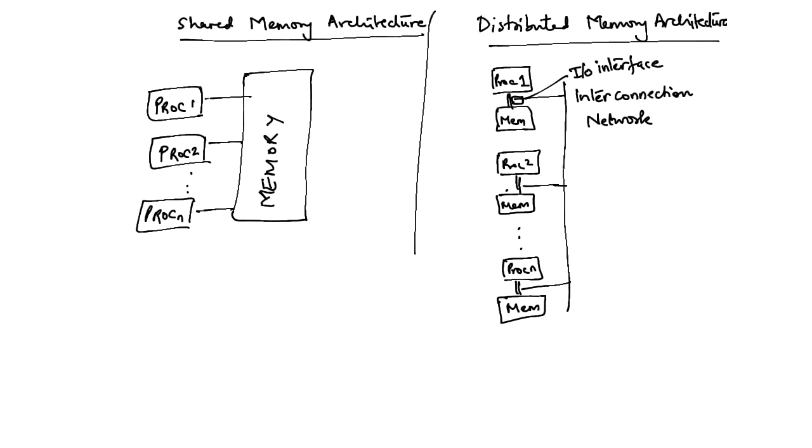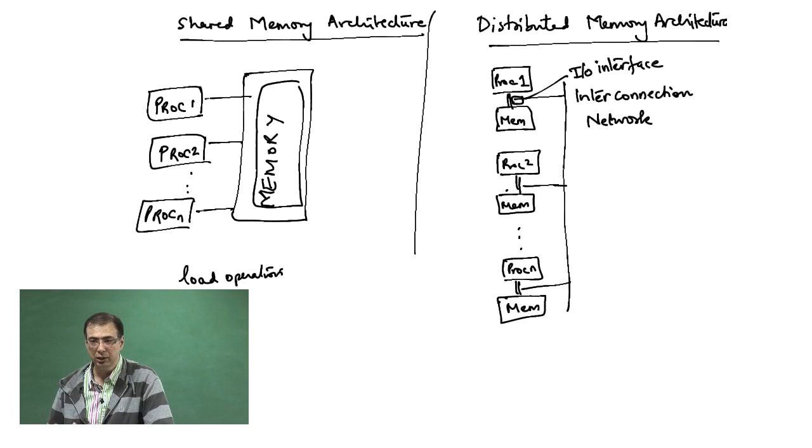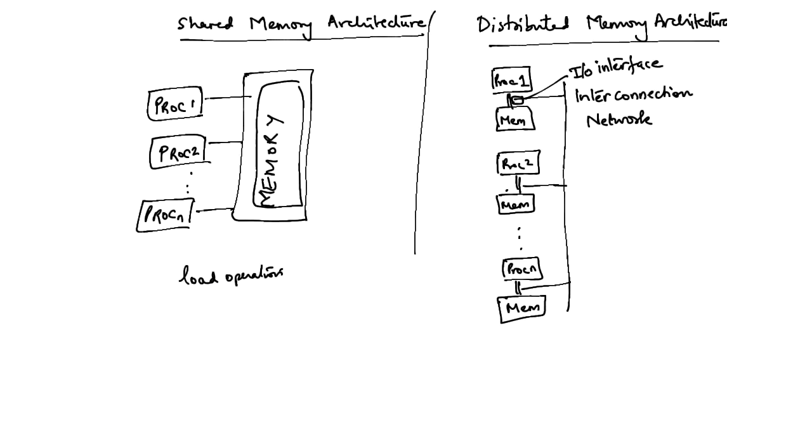What is the major difference here? The major difference is that if I want to perform a load operation, if processor 1 performs a load operation, it can access any location in this entire memory just using a load operation or similarly store some value. It can access any location of the memory using normal load store instructions. The normal instruction set works.